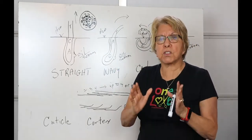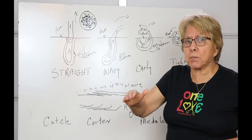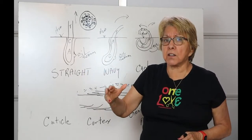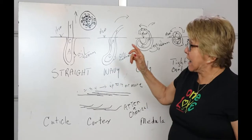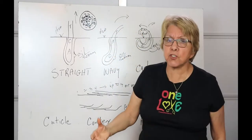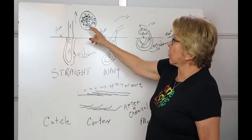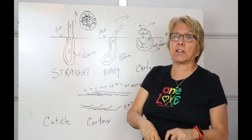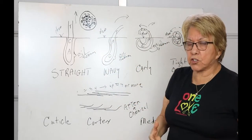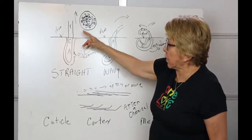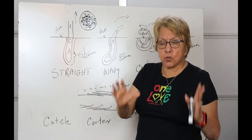Hair contains carbon, oxygen, hydrogen, nitrogen, and sulfur — think of the word COHNS. That's why you get a sulfur smell when you burn hair. When you apply a chemical, it penetrates to the cortex. You can't change your hair structure without reaching the cortex. The cortex is where your natural color is — that's your keratin protein and pigment strength.